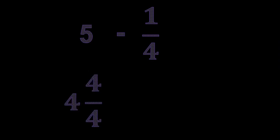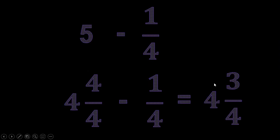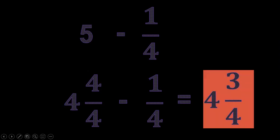So the new minuend is four and four-fourths. Copy and subtract one-fourth. Subtract the whole number: four minus zero equals four, then four minus one equals three. Copy the denominator four. So the final answer is four and three-fourths.